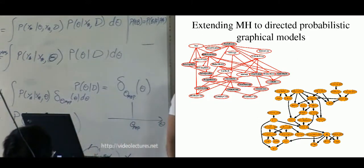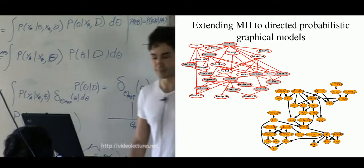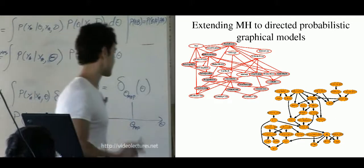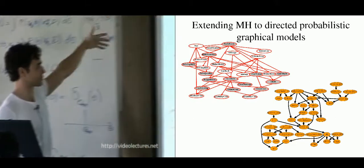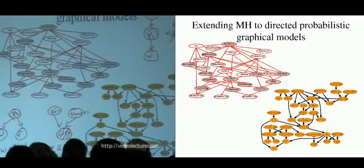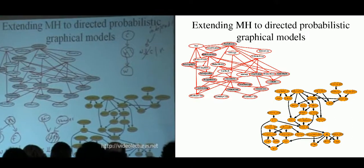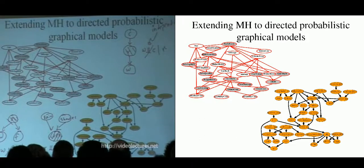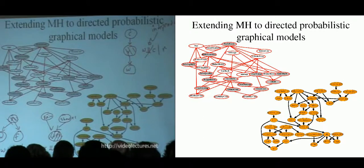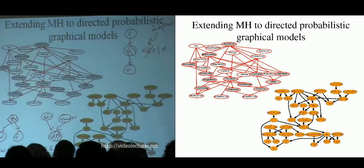This defines something called a graphical model. A typical graphical model has many nodes and indicates how variables depend on each other. You learn the structure of these graphical models and all the conditional probability tables. For smaller networks this can all be learned directly; for larger networks you need inference techniques.